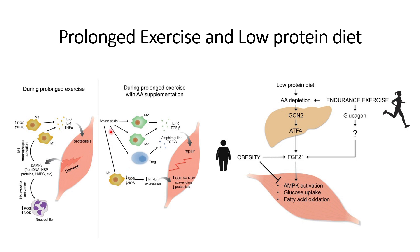Amino acid supplementation will also promote differentiation toward M2 type macrophages. If you have followed this channel, you may recall a video where I discussed that M2 type macrophages have pro-tumorigenic properties, but that is not always the case — M2 macrophages also have immune suppression properties, and that property is taken advantage of here. The immune response will be suppressed by these M2 macrophages and also by T regulatory cells, which may allow repair of the muscle cells with minimal inflammation.